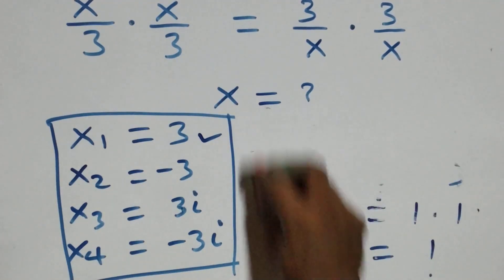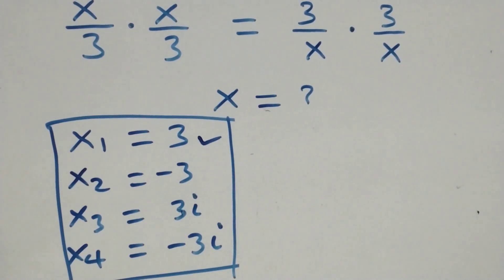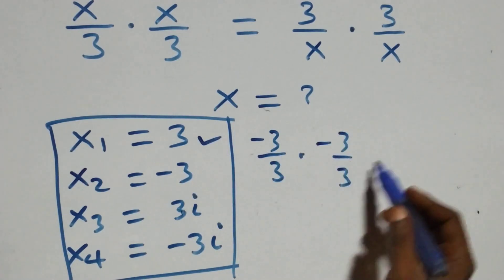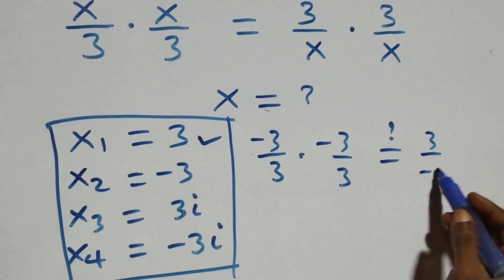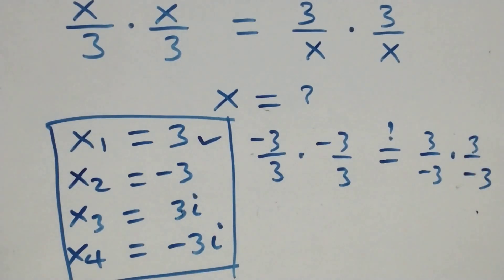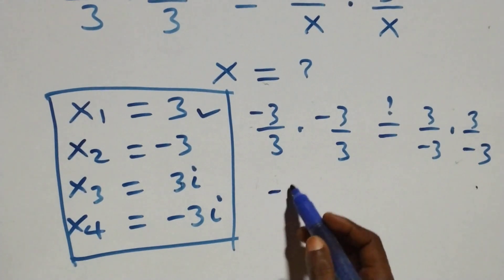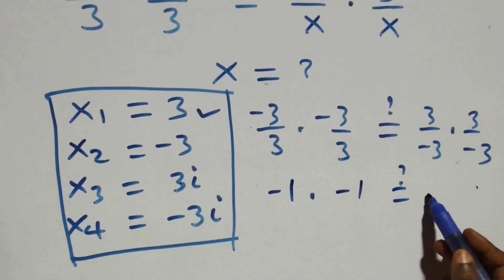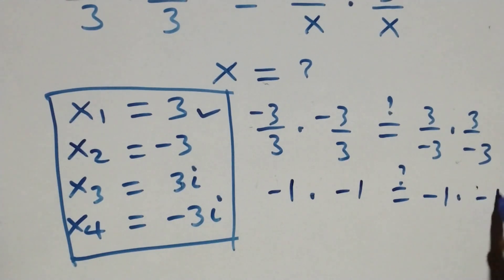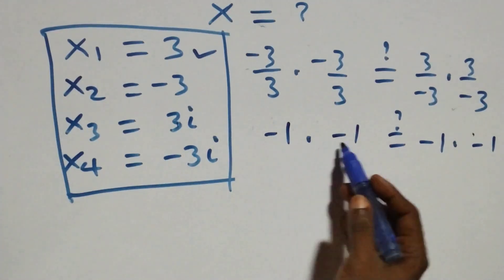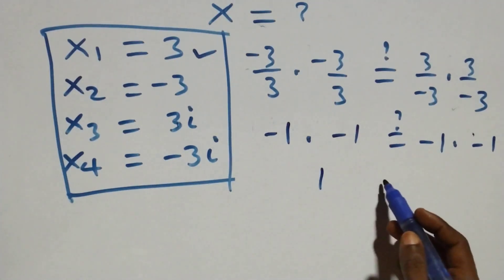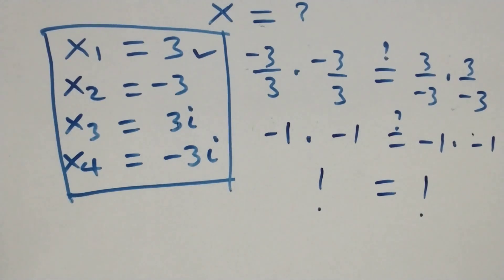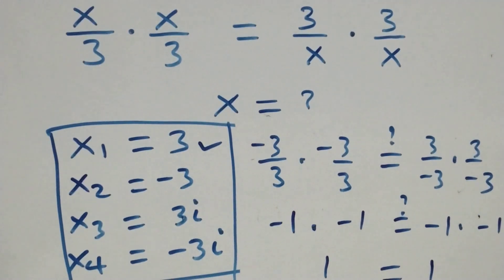For x equals minus three, we substitute and get minus three over three times minus three over three, which should equal three over minus three times three over minus three. Minus three over three is minus one, so minus one times minus one equals minus one times minus one. Minus times minus is plus, giving one equals one. Hence minus three also satisfies the given problem.